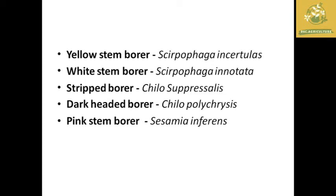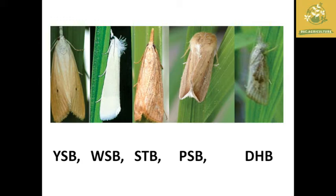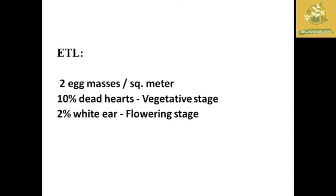Based on the stem borer color, they have different scientific names: yellow stem borer — Chilopaga innotata; white stem borer — Chilopaga polychrysa; striped borer — Chilo suppressalis; dark-headed borer — Chilo polychrysa; pink stem borer — Sesamia inferens. These are the different borers present in rice with their scientific names and pictures — yellow stem borer, white stem borer, pink stem borer, and others.